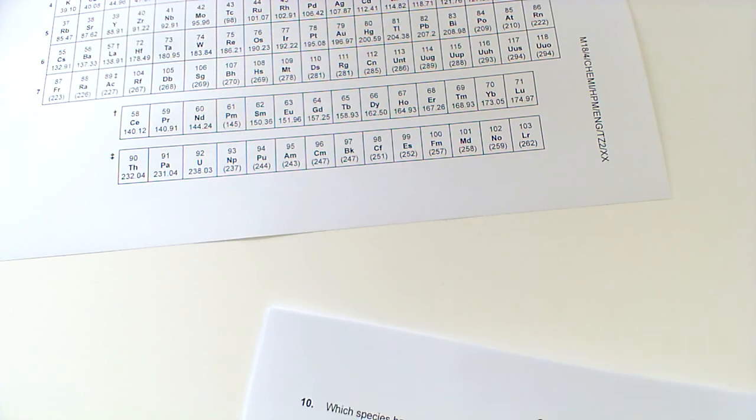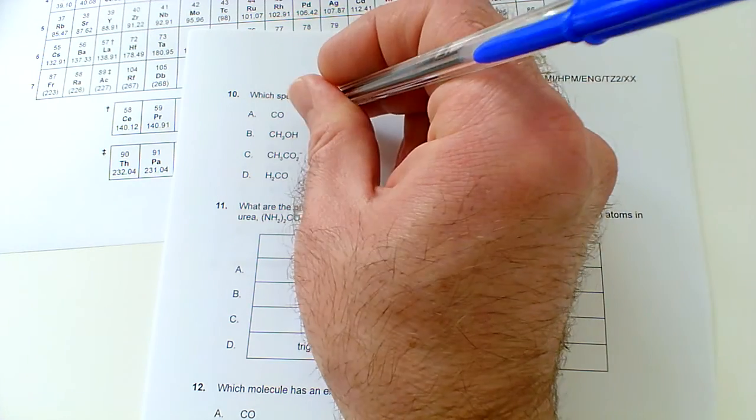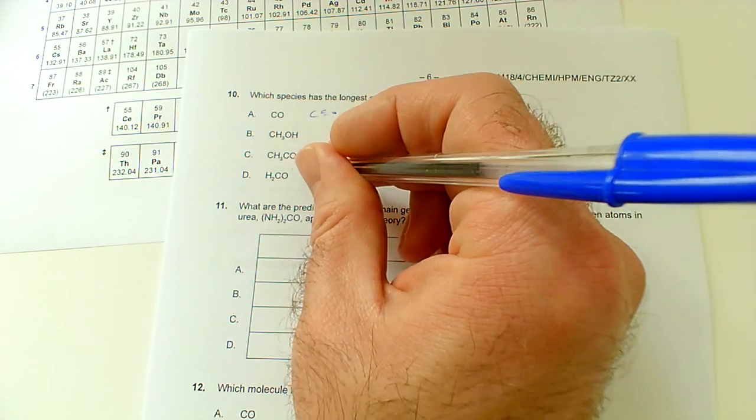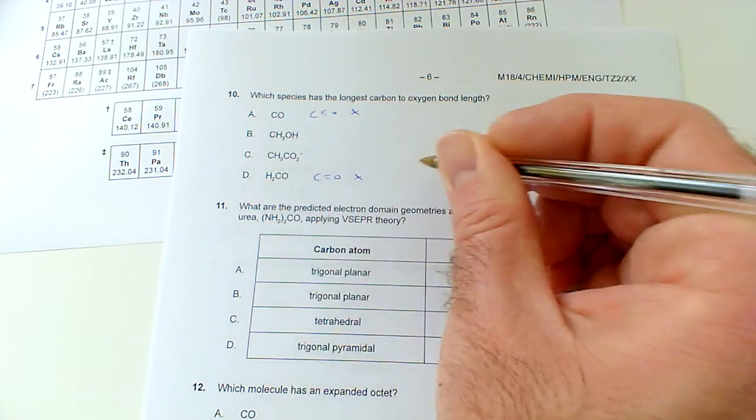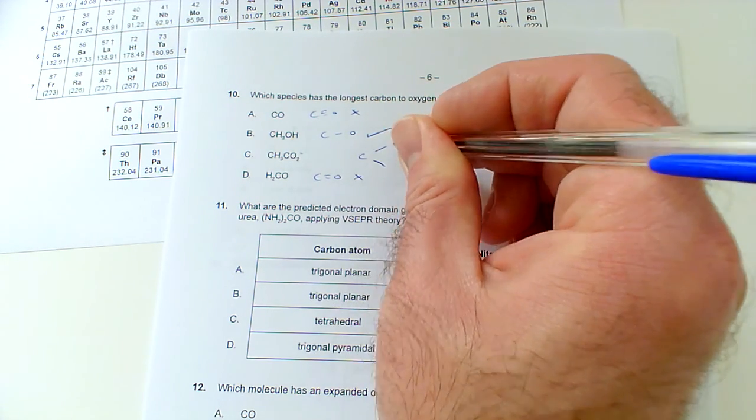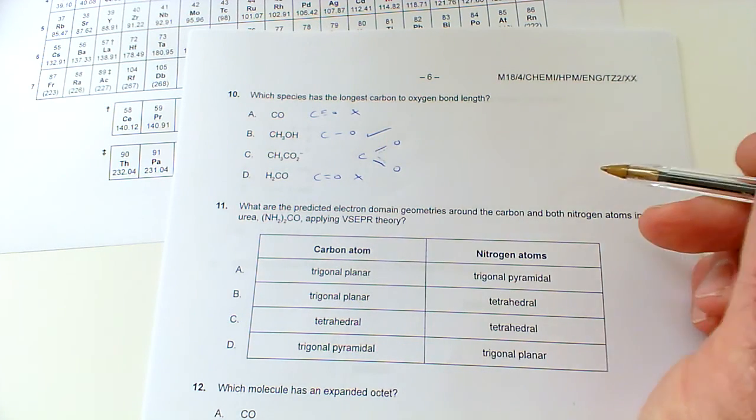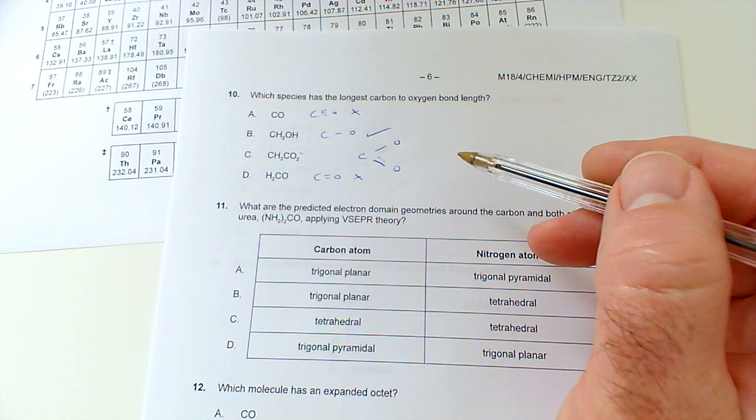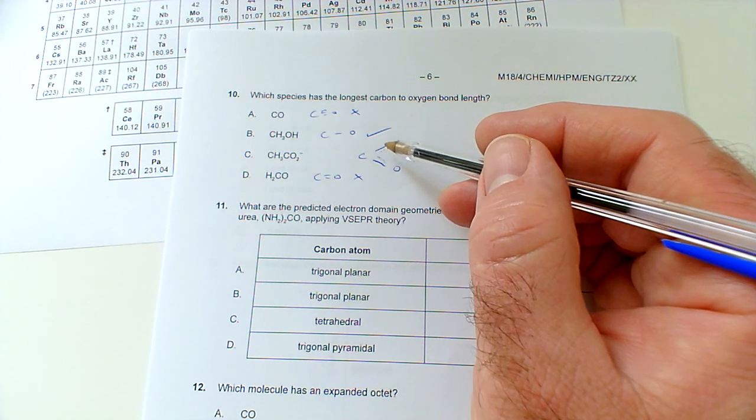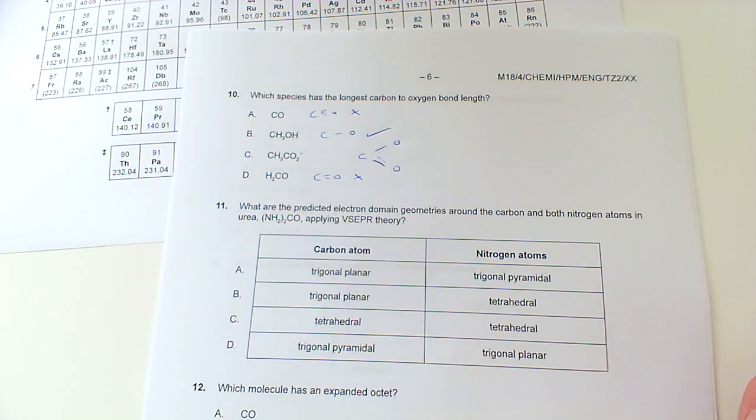And then the last one for this video. Number ten: which species has the longest carbon to oxygen bond length? Well in this one it's a triple bond, so it's not that one. In this one we've got a double bond, it's not that one. In this one we've just got a single bond, so that looks good to me. And then in this one of course we've got the ethanoate ion where it's actually a resonance hybrid, which is the two carbon oxygen bonds are somewhere in between a double and a single. But it's still going to be shorter and stronger than just a single bond on its own. So we're going for the single bond in the alcohol methanol, so that will be B.